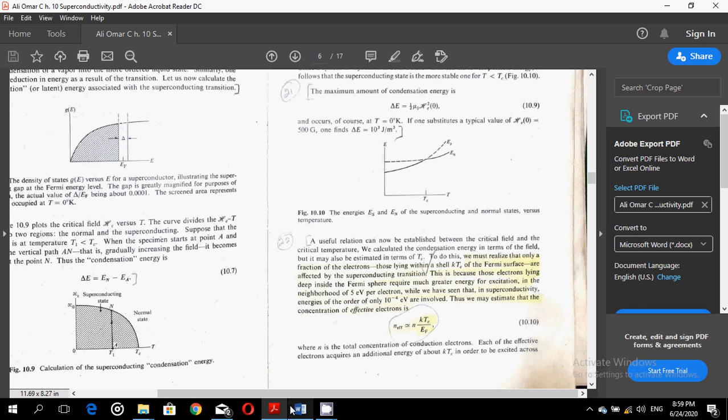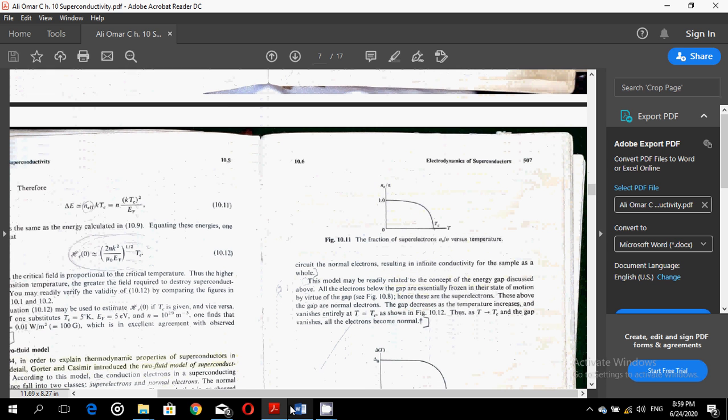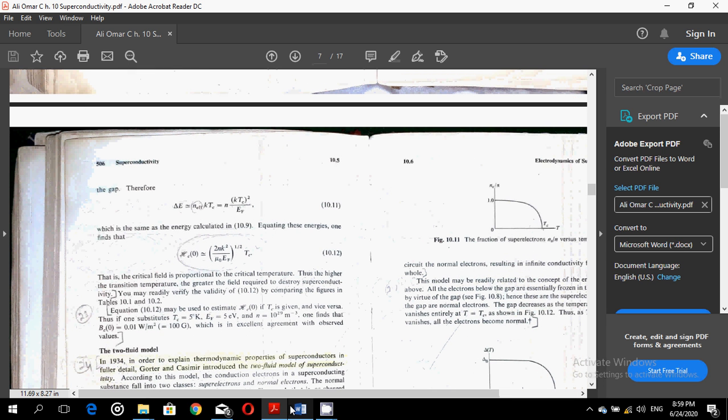While we have seen that in superconducting, energies of the order of only 10 to the power minus 4 electron volts are involved. Thus, we may estimate that the condensation of effective electrons is given by the equation n effective is of the order of n ktc over ef, where n is the total concentration of conduction electrons. Each of the effective electrons acquires an additional energy of ktc in order to be excited across the gap.